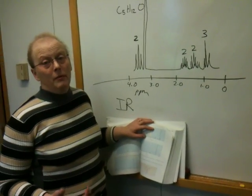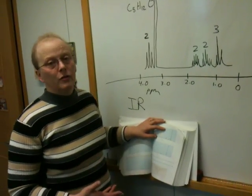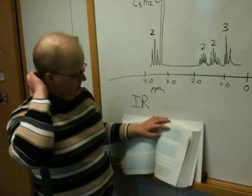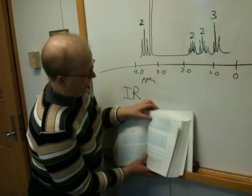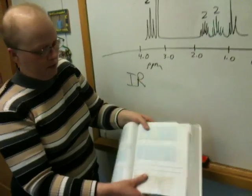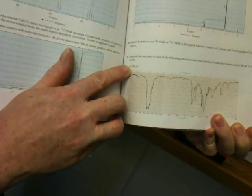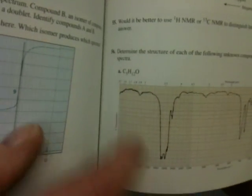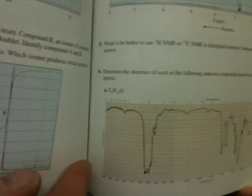I'm going to start by doing a problem I've never done before, and I'm going to give you this problem set in class. I'm going to do two problems. So this is the IR spectrum of a compound C5H12O.